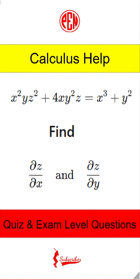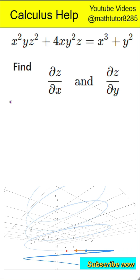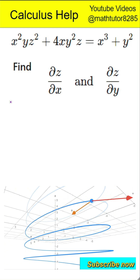This question is to find partial derivatives. Find the partial derivative of z with respect to x and the partial derivative of z with respect to y for the function: x squared times y times z squared plus four times x times y squared times z equals x cubed plus y squared.